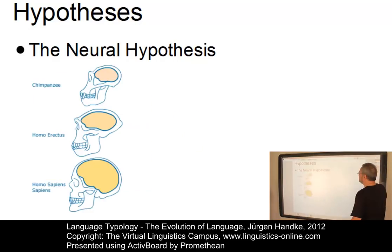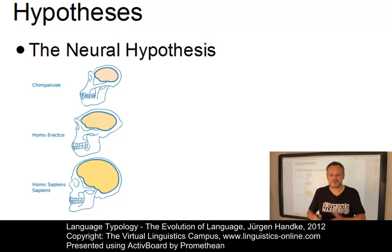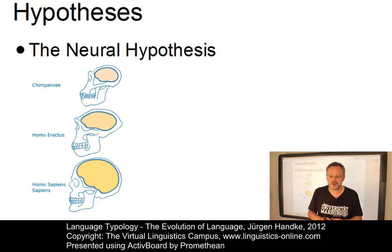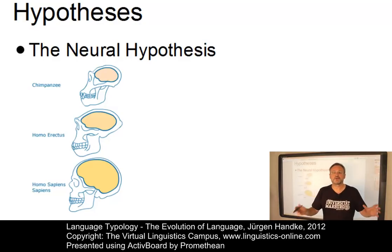The neural hypothesis holds that language resulted from a gradual increase in general intelligence, documented by an increase in brain volume as seen earlier, and thus an increase in the precision of the wiring of the neural network.